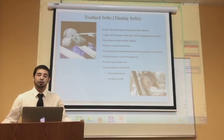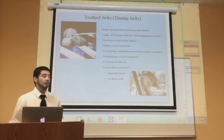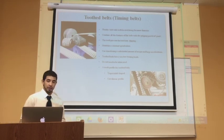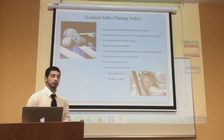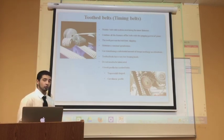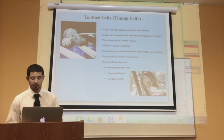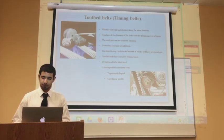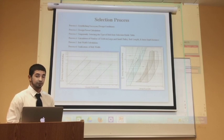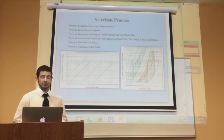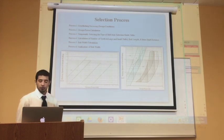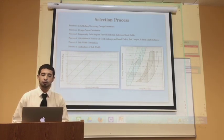For my part of the presentation, I will be discussing tooth belts and round belts. Tooth belts are essentially flat belts with teeth along their inner diameter. These belts combine all the features of flat belts with the gripping power of teeth, require no lubrication, and their teeth can come in either trapezoidal or semi-circular shape. The selection process is similar to that of V-belts: once you've established the design conditions, you can use a selection guide table to determine the proper tooth belt for your application.